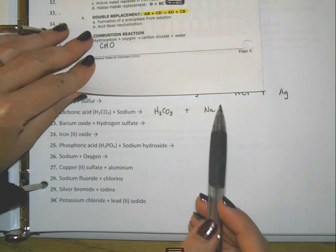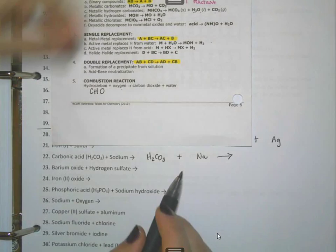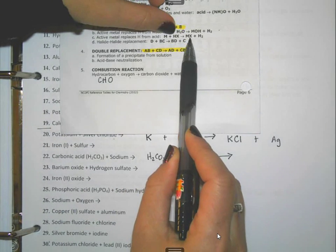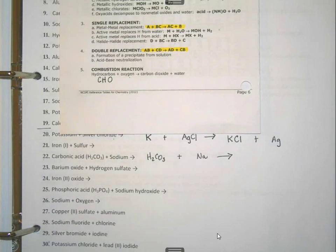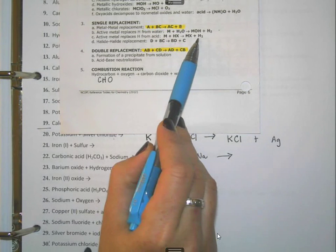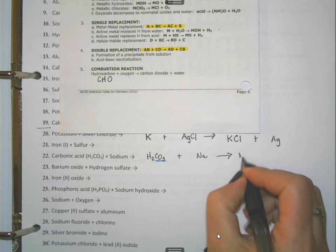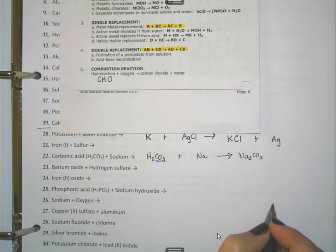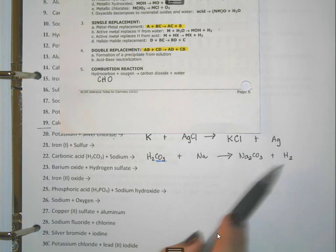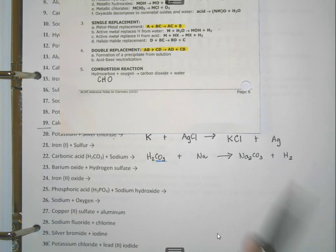The reference table tells me what to do next. The metal will go with whatever was with the H. So sodium needs to go with carbonate, and hydrogen comes out by itself. The proper formula for sodium and carbonate is Na₂CO₃. Hydrogen comes out as H₂ because it's part of Brinkelhoff — one of seven elements that always gets written diatomically when it's elemental, pure hydrogen.